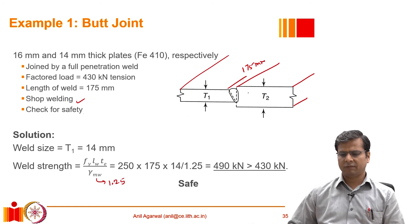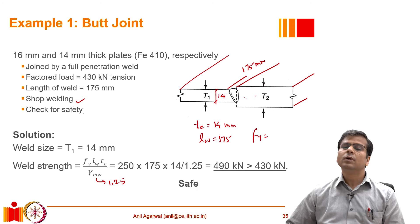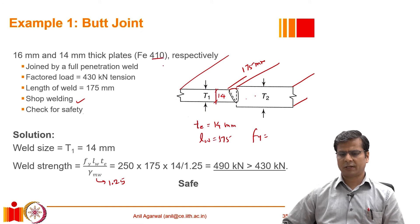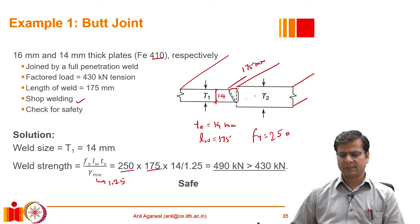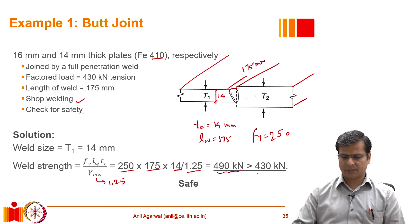Between T1 and T2, T1 is the smaller at 14 mm, so Te = 14 mm, LW = 175 mm, and Fy = 250 MPa (minimum of the weld material's 330 MPa and Fe 410's 250 MPa). Substituting Te × LW × Fy / γMW gives a design capacity of 490 kN. Since the capacity of 490 kN is greater than the demand of 430 kN, this welded connection is found to be safe.